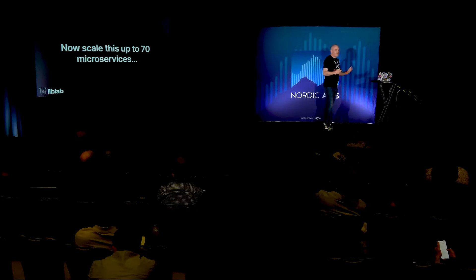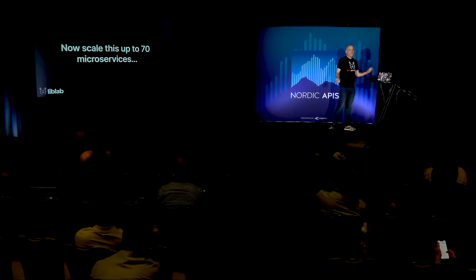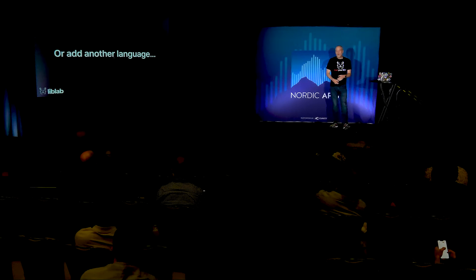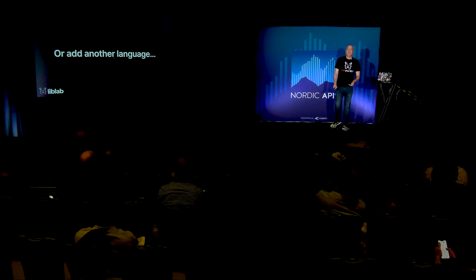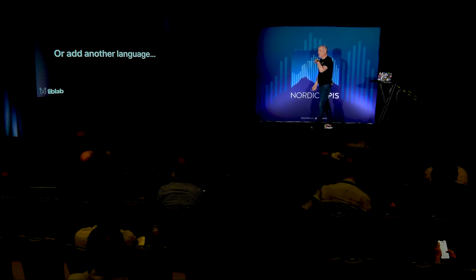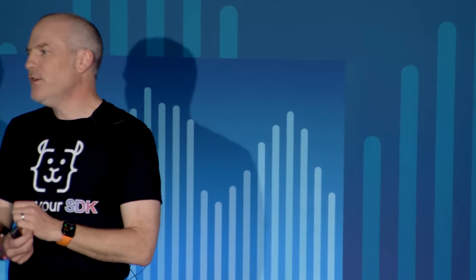And imagine you scale that up. Seventy, a hundred, a thousand microservices — or you want to add another programming language. A new team starts: we want to use Rust because we love Rust. Now you're building ten Rust layers. The whole thing scales up. So I automate all the things. I don't want to build layers of abstraction manually. I want automated SDK generation.